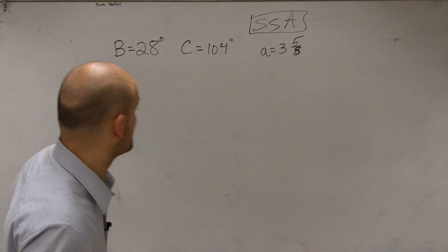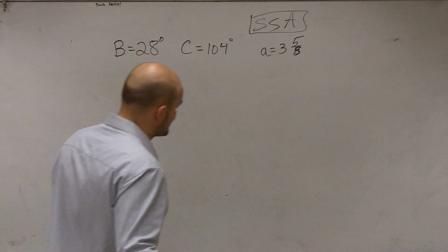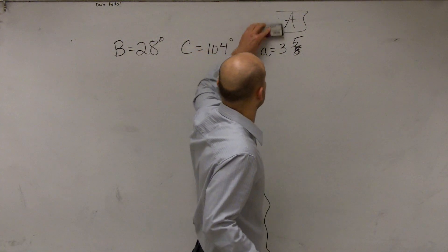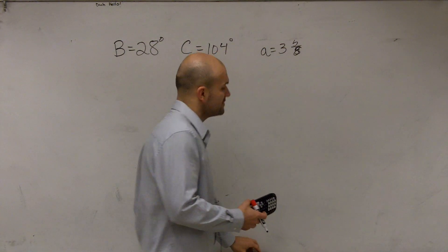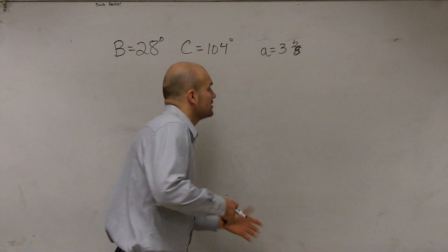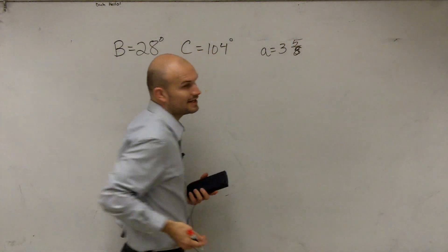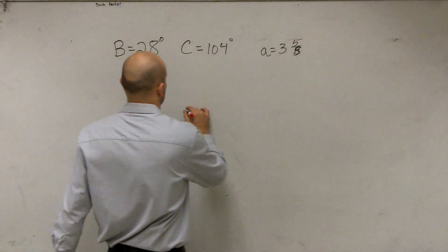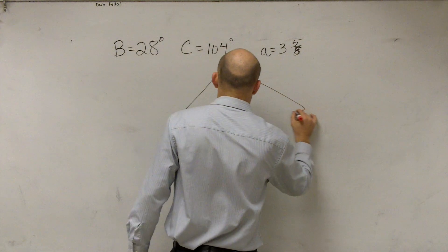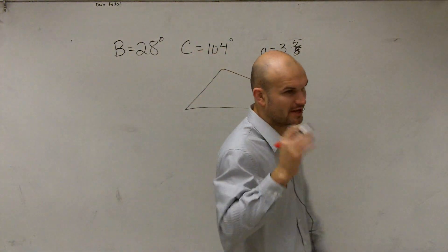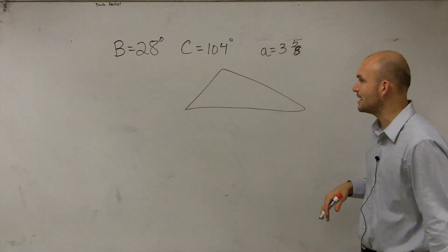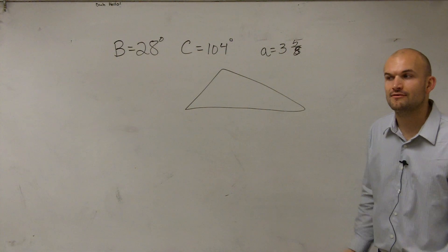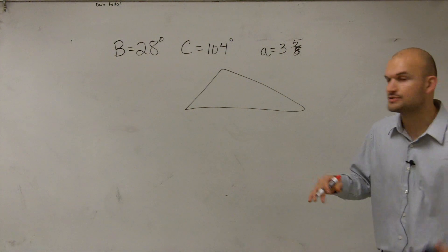So this case, we actually don't have a side-side-angle. But let's go through the Law of Sines again. So in the first matter, if you guys are just given information and you don't have a triangle, the first thing is just to draw an oblique triangle. I'm just going to draw it in the center for reference.